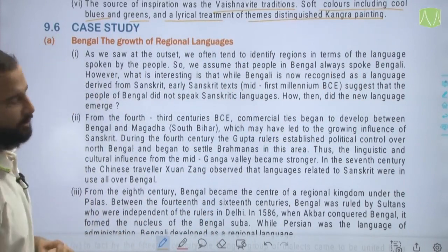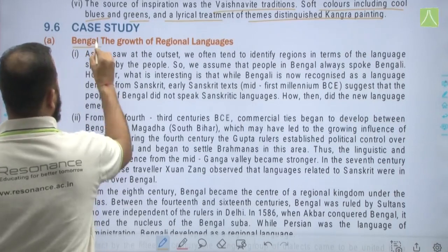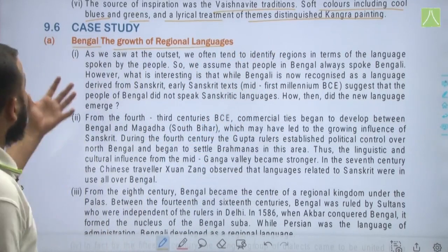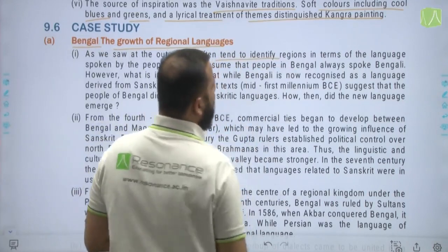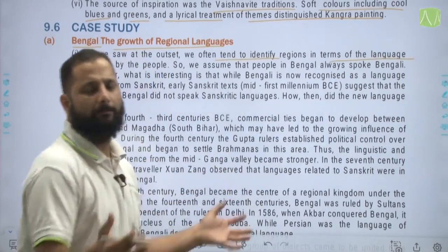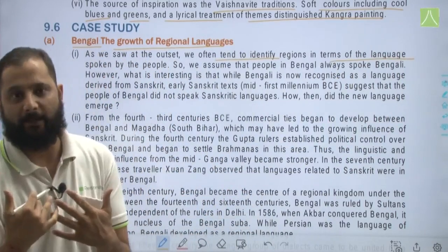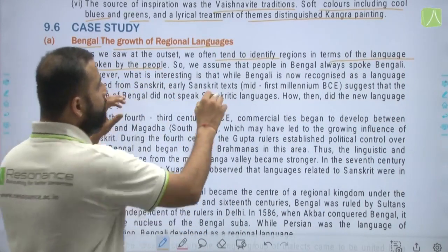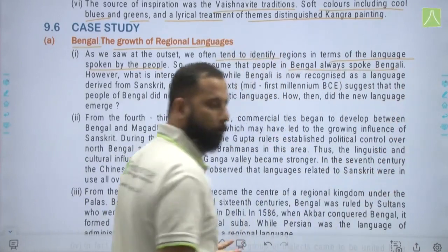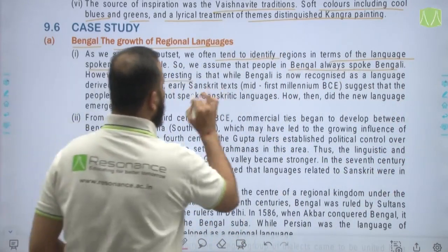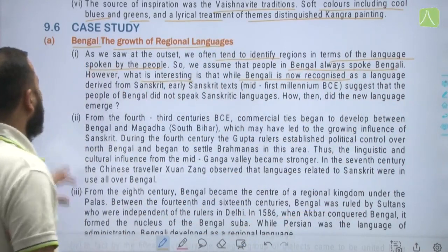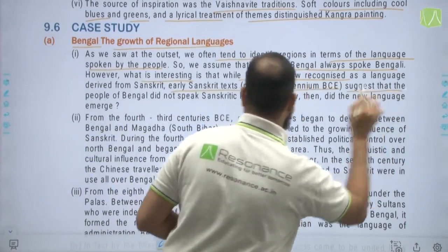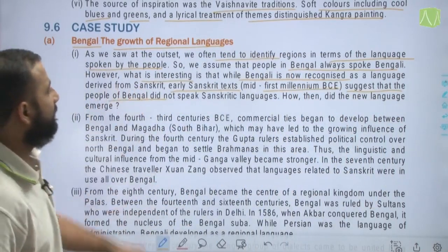Our case study is Bengal and the growth of regional languages. We often tend to identify regions in terms of language — which language is spoken by the people. We assume people in Bengal always spoke Bengali. However, while Bengali is now recognized as a language derived from Sanskrit, early Sanskrit texts from around the mid-first millennium BC suggest that the people of Bengal did not speak Sanskritic languages.